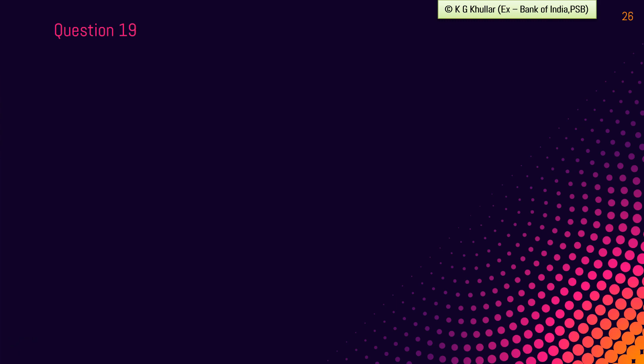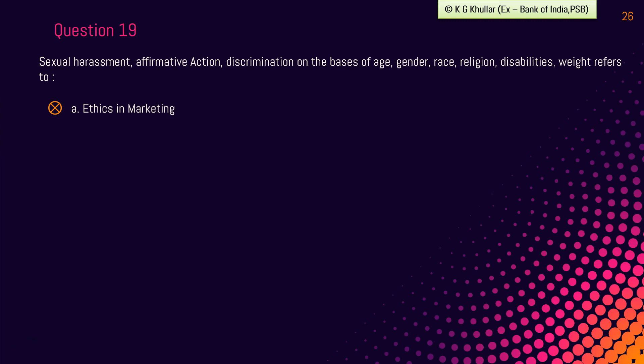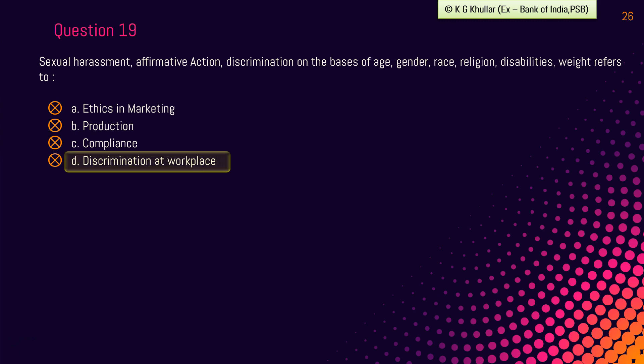Next question: sexual harassment, affirmative action, discrimination on the basis of age, gender, race, religion, disabilities — this refers to — option A: ethics in marketing; option B: production; option C: compliance; option D: discrimination at workplace. This is also one of the easier questions and the correct answer is option D — discrimination at workplace. This topic we have already discussed in our theory lecture.